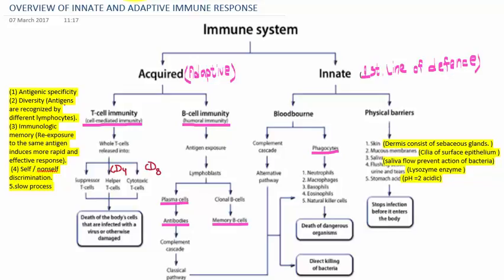The first one is the innate immune system. Innate immunity refers to the immune responses that are present from birth. Innate immunity consists of physical barriers like the skin. The skin surface is divisible into two parts: the epidermis and the dermis. The dermis is composed of connective tissue and contains blood vessels and sebaceous glands, which help in the defense mechanism.